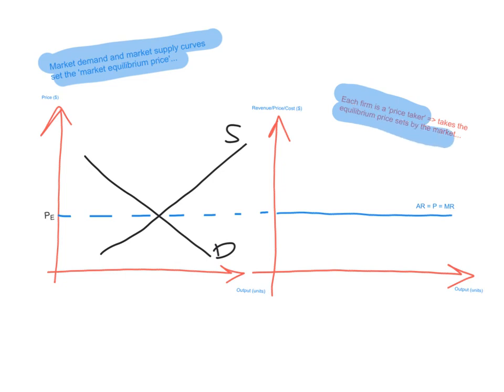This is why the demand curve that each firm faces is a horizontal, perfectly elastic demand curve. It is also the average revenue and marginal revenue curve, so average revenue equals price equals marginal revenue. This is the demand curve that one firm in a perfectly competitive market faces.